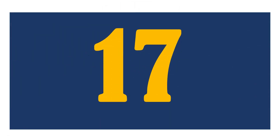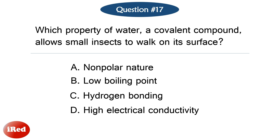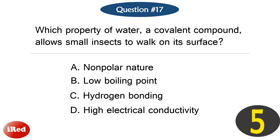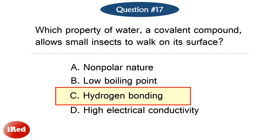Question number 17. Which property of water, a covalent compound, allows small insects to walk on its surface? The correct answer is letter C, hydrogen bonding.